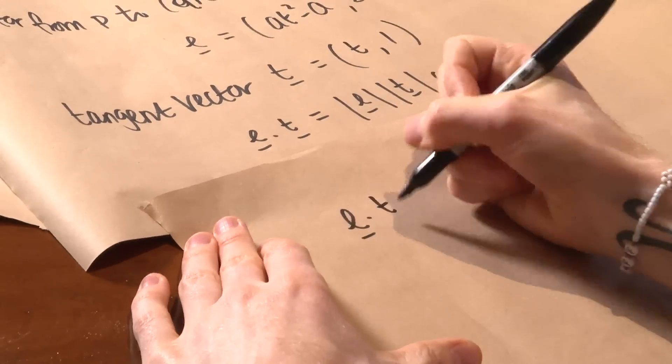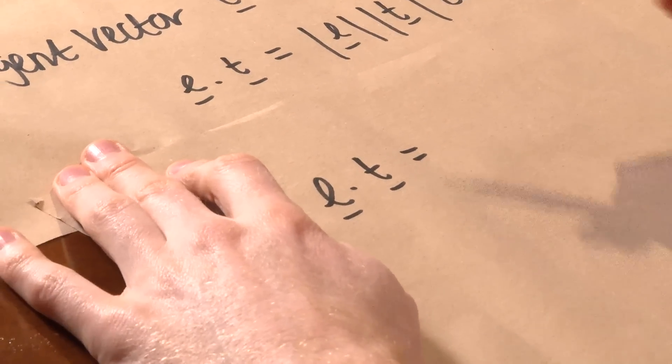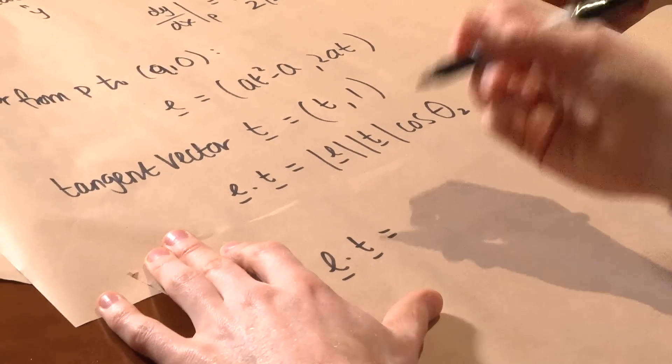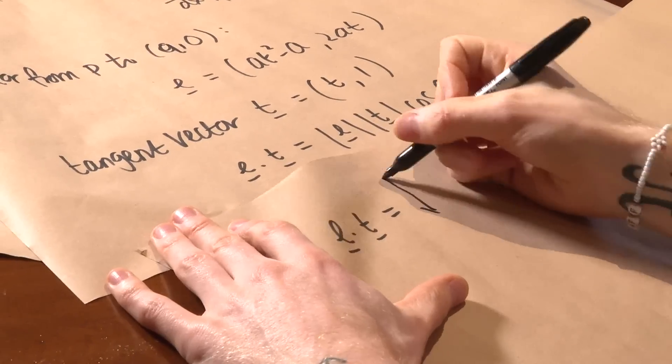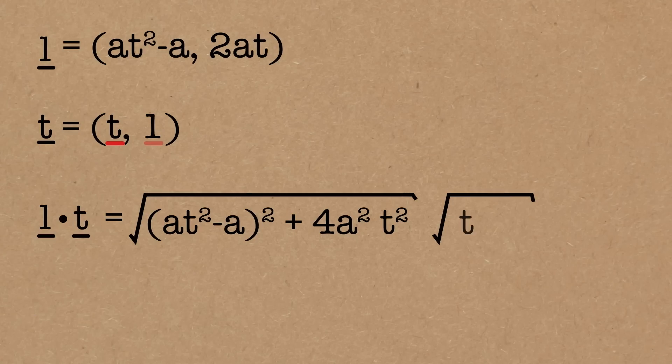So L dot t is the size of L. So when you work out the size of a vector you square each term, add them together and then square root. So the size of L is this first one squared, (a t squared minus a) squared, plus second one squared 4 a squared t squared. So that is the size of L. Size of t, a bit easier thankfully, it's the square root of the first one squared plus the second one squared and then we've got cos of theta 2. Now of course we can do the dot product, we've got vectors so you do the first components multiplied together added to the second two multiplied together.